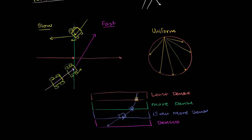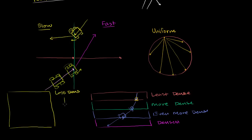If you had a continuous structure where density just keeps increasing with depth — less dense near the surface, most dense at the bottom — then instead of discrete bends, you'd get a continuous curve. The P wave would constantly be refracted outward in a smooth arc.